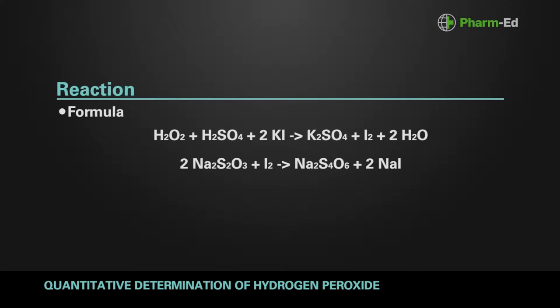H2O2 is determined by using an oxidation-reduction reaction with potassium iodide in acidic conditions. The iodine that is released is determined by titration with a 0.1N sodium thiosulfate solution. This test is recommended for facilities that have qualified, trained personnel and the necessary equipment for obtaining reliable results.